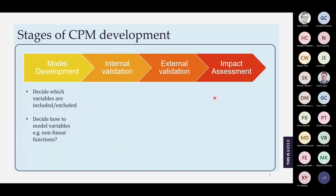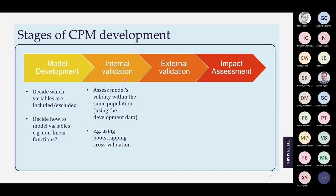The stages of clinical prediction model research begin with model development, where we decide which variables or characteristics of patients will enter the model and how we'll model those variables — perhaps non-linear functions. This is the phase I'll really focus on, because this is where things can go really wrong. I'm going to focus on sample size for development. The next phase, internal validation, should always accompany model development: we assess the model's validity in the same population we used to develop it, using techniques like bootstrapping or cross-validation, measure optimism, and adjust for it.